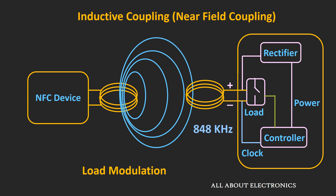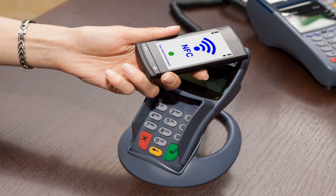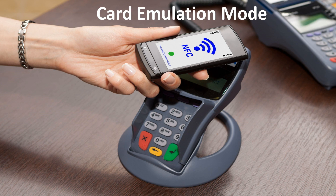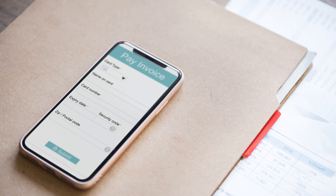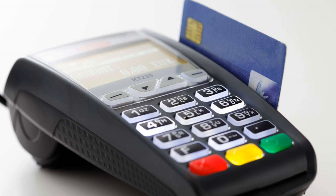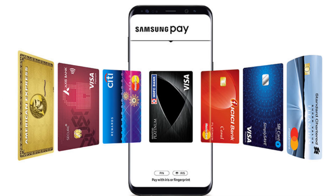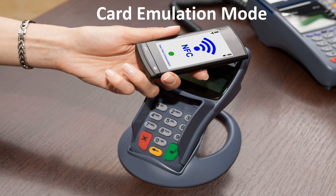The third mode is card emulation mode, used when smartphones are used for mobile payments. In this mode, both devices are active — typically a smartphone and a payment terminal — but the smartphone acts like a passive smart card. It does not generate its own radio waves but only responds back with the requested data to the payment terminal. In this way, the smartphone acts like a passive device, and the operating principle is similar to reader or writer mode.